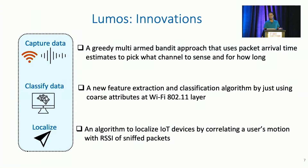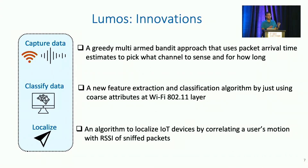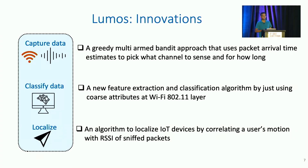To develop Lumos, we had three key innovations. First, we propose a new data-capturing module that uses a greedy multi-arm bandit approach to learn the transmission behavior of each device. It then uses this information to decide at every time t what channel to sense and for how long. We also propose a new feature extraction and classification algorithm that can predict a device type using only encrypted Wi-Fi 802.11 packets. We propose a new localization algorithm that localizes devices by correlating a user's motion through the space with the RSSI, or received signal strength indicator, of the wireless packets. In the interest of time, I will only describe the key insights behind our data classification module, but please refer to our paper for more details.